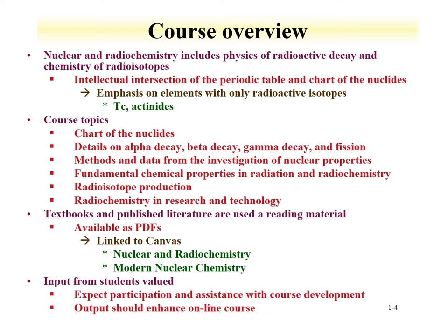Within radiochemistry, we want to emphasize elements with only radioactive isotopes, since they're unusual examples. As examples, technetium, element 43, sits in the middle of the periodic table. We'll discuss the chemistry of technetium, and particularly focus on the chemistry of the actinide elements, which are those elements that have 5F electrons at the bottom of the periodic table.